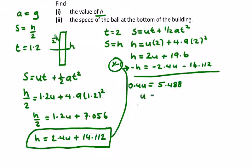So u equals 5.488 divided by 0.4, giving me 13.72 meters per second, or m/s.